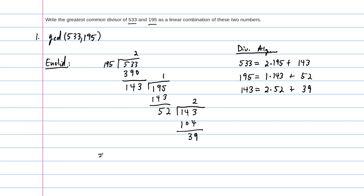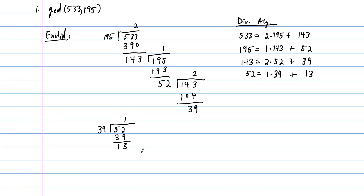We have a couple more steps. 39 into 52 goes in once, and the difference is 13. So the next step is: 52 is equal to 1 times 39 plus 13. And finally, we find our greatest common divisor because 13 into 39 is a perfect 3 with zero remainder. So the last step is: 39 is equal to 3 times 13 plus 0.